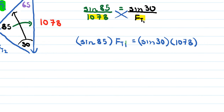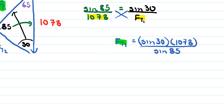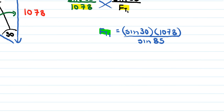Cross-multiplying: sine of 85 times FT1 equals sine of 30 times 1078. Dividing both sides by sine of 85 isolates FT1. Calculating sine of 30 times 1078 divided by sine of 85 gives approximately 541.06 newtons. Rounded to two significant figures, 540 newtons is the tension in the right-hand rope.